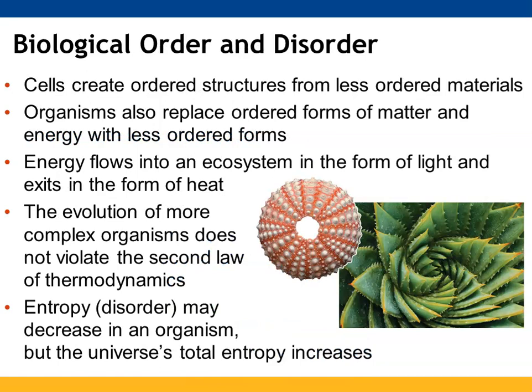In terms of biological order and disorder, cells take lots of small unstructured materials and are able to make ordered structures from them. They can also take ordered matter and energy and turn it into less ordered forms, such as with catabolic pathways when you break things down. In an ecosystem, energy can enter through light and exit through heat. Having more complex organisms doesn't mean we're breaking the second law — you can have increases or decreases in entropy within an organism, but as long as the universe's overall entropy is increasing, the second law is still being met.